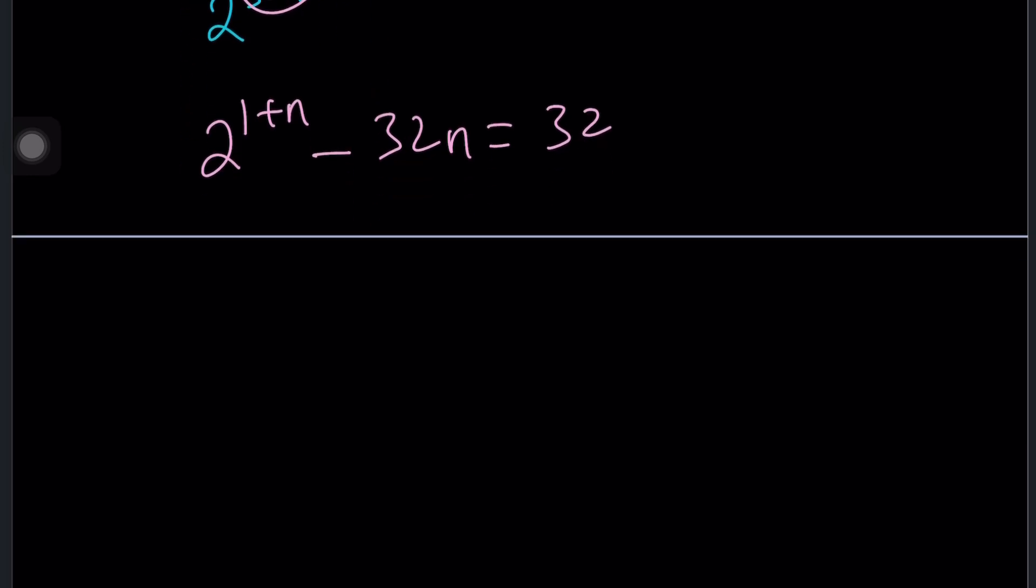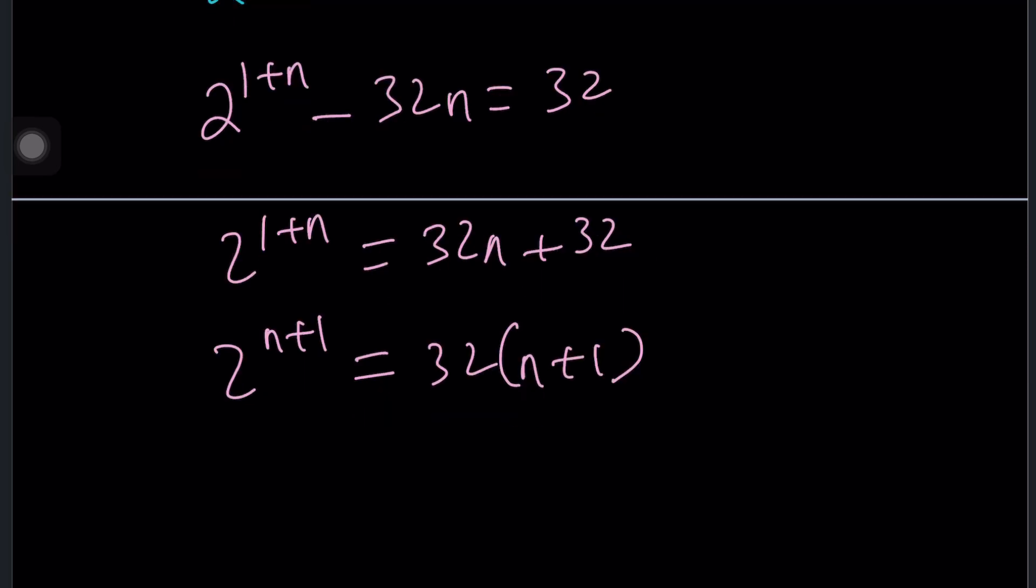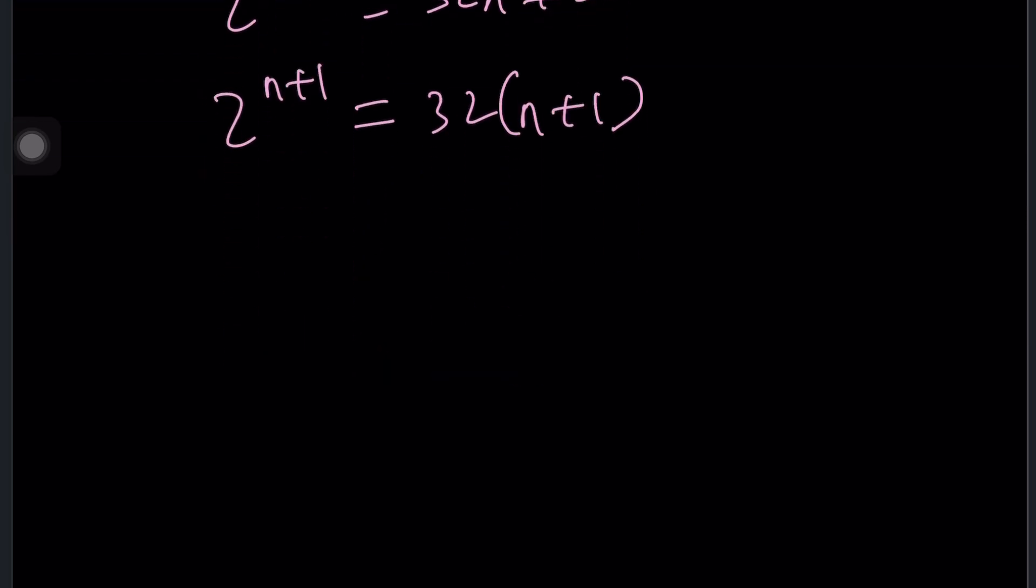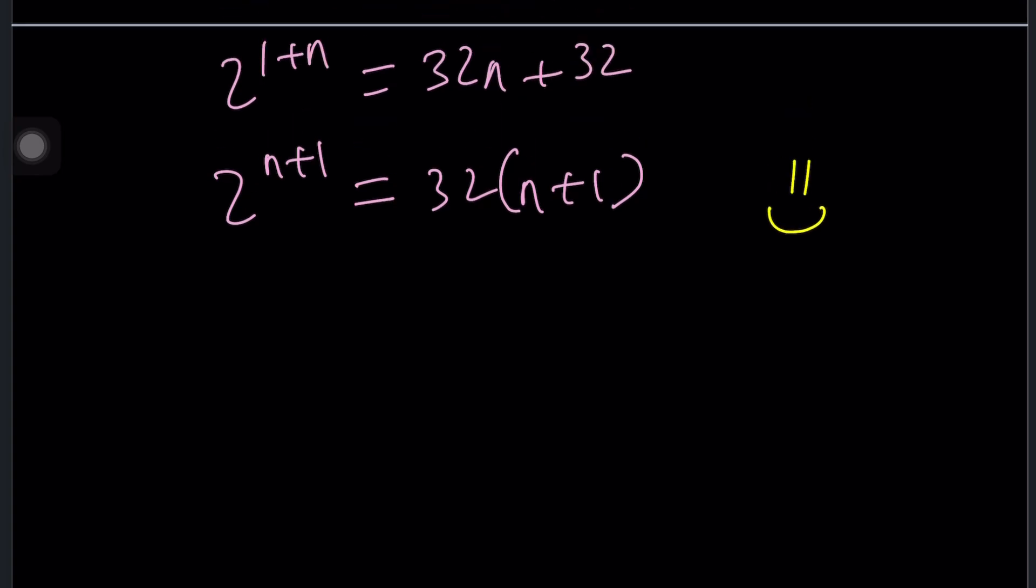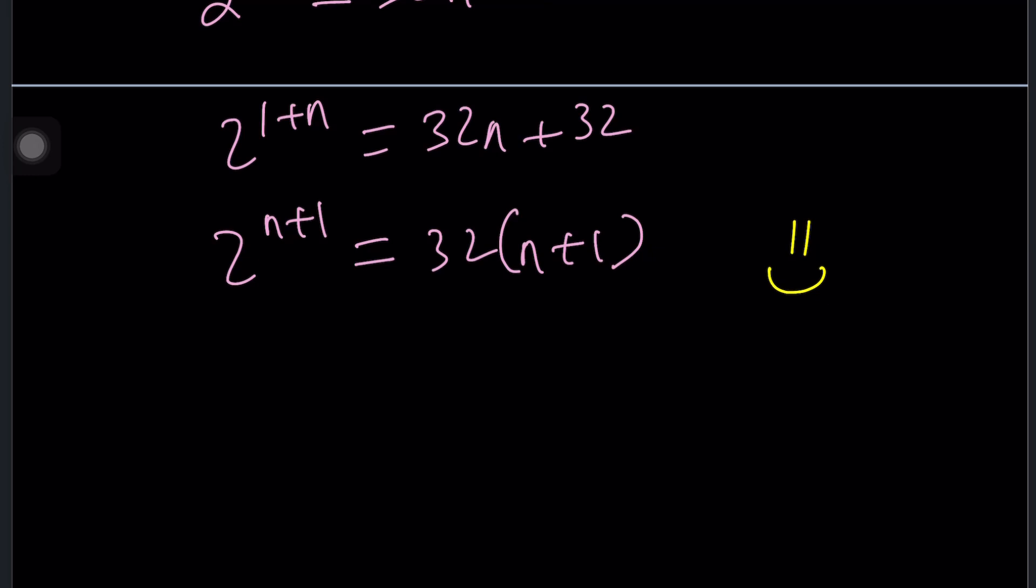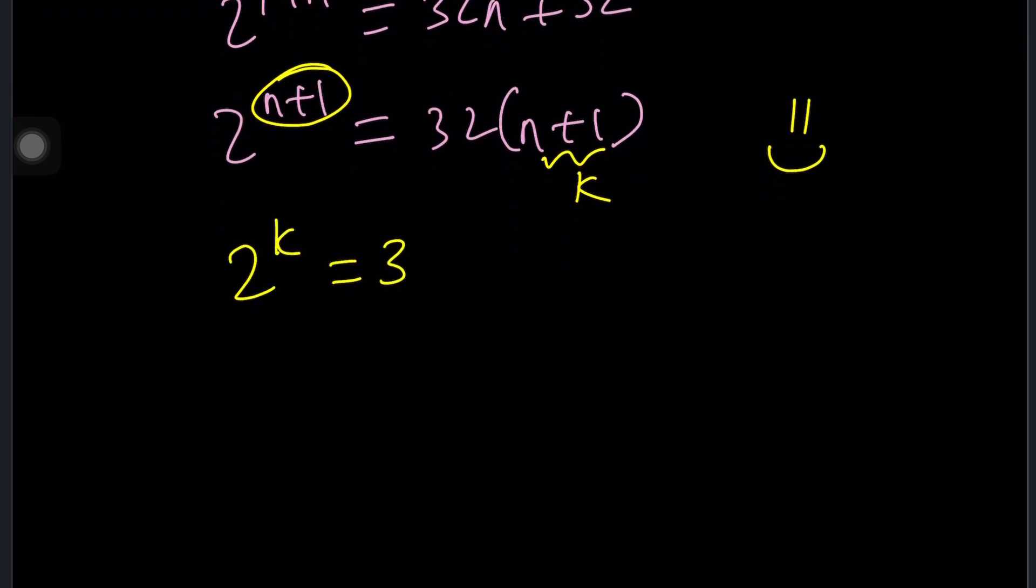2 to the power 1 plus n minus 32n equals 32. Division turns the exponents into a difference. I know this equation is not easily solvable, but now I think we can use the 32. Let's put this on the right-hand side. Let me write this as 2 to the power n plus 1. One of the things that's really nice about this is the presence of n plus 1. This calls for substitution. Let's go ahead and call this k. Now this is also k. So we get 2 to the k equals 32k. Beautiful.